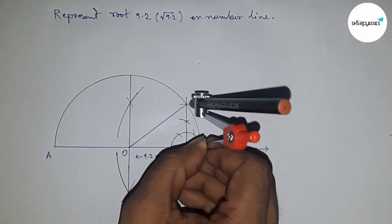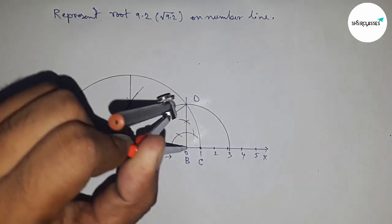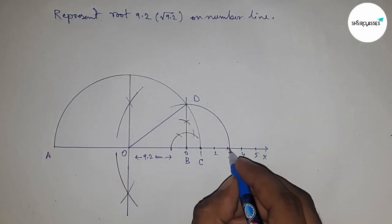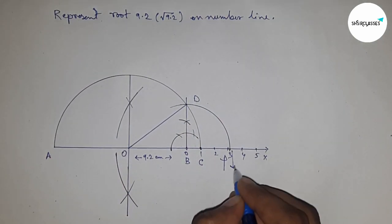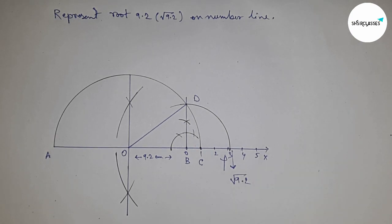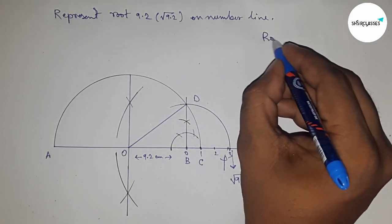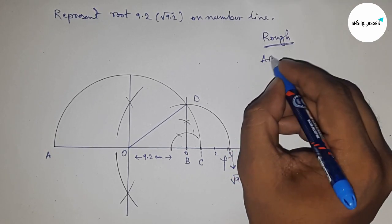Next, take the distance BD by compass and draw an arc which cuts the number line at a point, and this is the representation of √9.2 on the number line. Now let's discuss the calculation of √9.2.